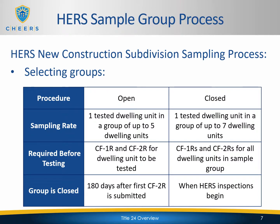There are two ways to group homes: the open method and the closed method. With the open method, you have up to six months or 180 days to group up to five homes — one home is tested, and up to four more homes are grouped with that one test. With the closed method, you can group up to seven homes — one tested and up to six grouped — however, the group is closed the day the test is completed. That means all CF2Rs and all lots must be identified before the test date, unlike the open method where you can keep adding to the group within the six months.